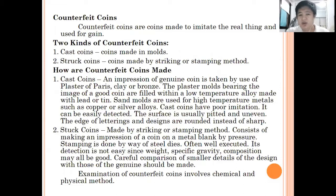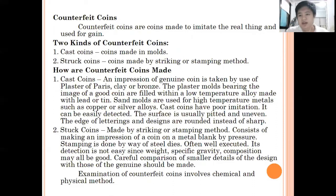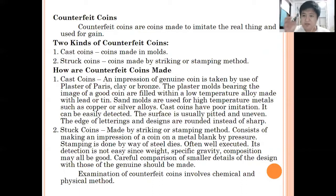The two methods of creating counterfeit coins are cast coins and struck coins. For cast coins, there is a mold that corresponds to the appearance of the coin, and metal is poured into it. For struck coins, there is a metal die that corresponds to the shape of the coin and it stamps on a metal sheet so that the appearance of the coin is embedded on that metal.